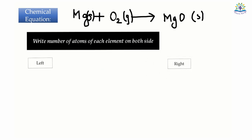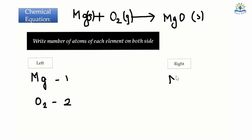First, make a note of the number of atoms of each element on both sides. On the left side: one atom of magnesium, two atoms of oxygen. While on the right side: one atom of magnesium and one atom of oxygen.